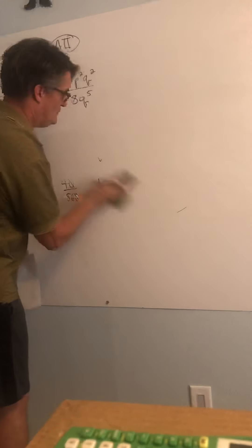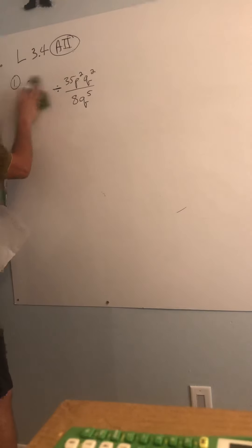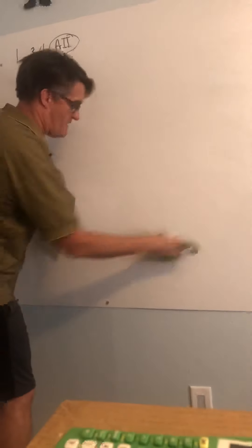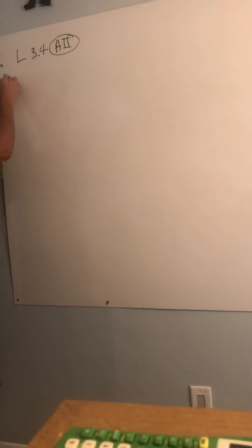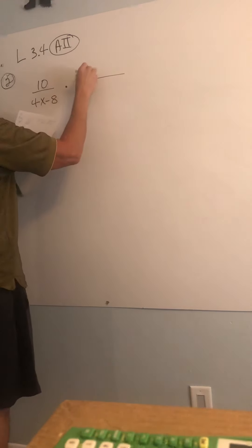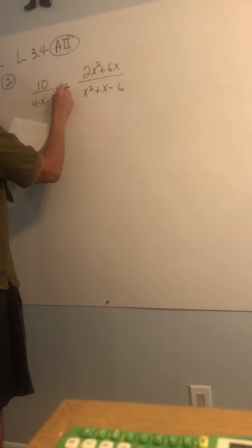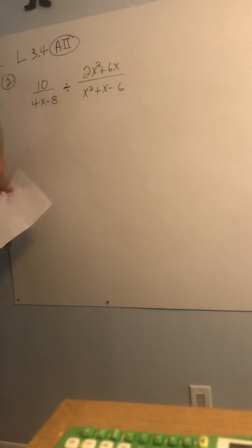So example two, let's take a look. A lot of times the hardest part in this chapter really is just writing these problems down and writing them down correctly. So example two, 10 over 4x minus 8 divided by, over here we got 2x squared plus 6x, and the bottom is x squared plus x minus 6, and this is a division problem. I'm jumping ahead here. Look at that. Look how I just changed the problem to multiplication.